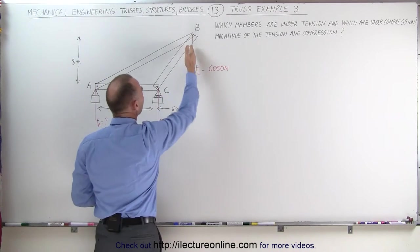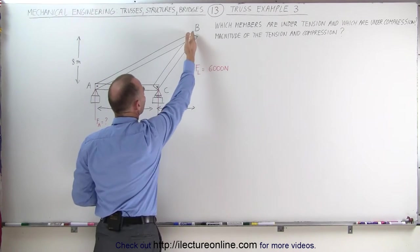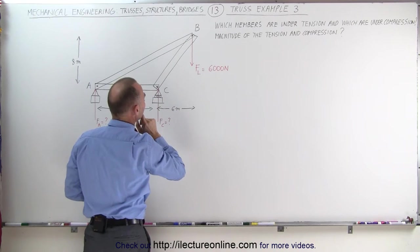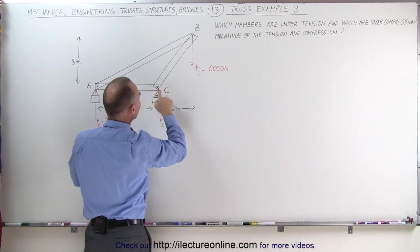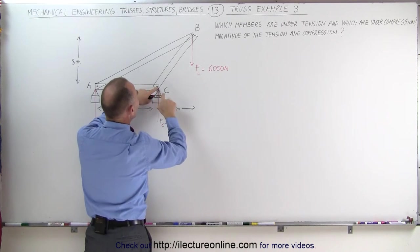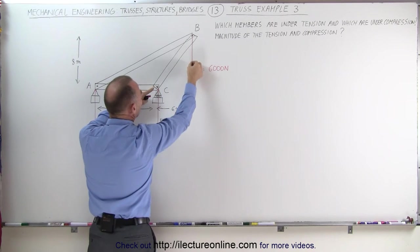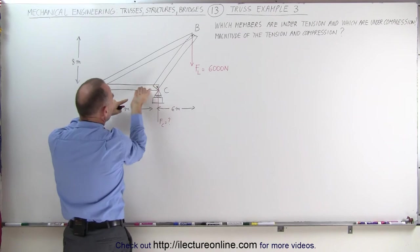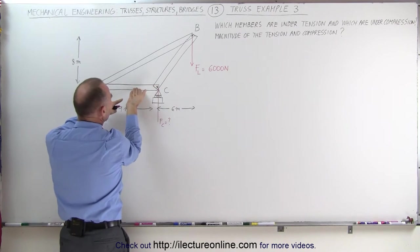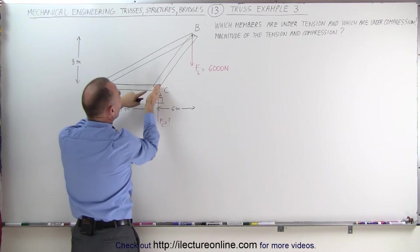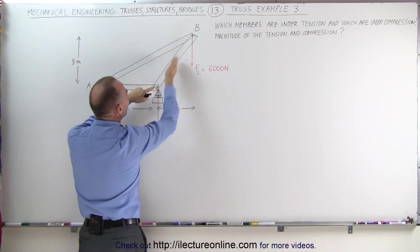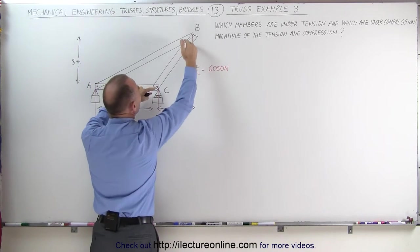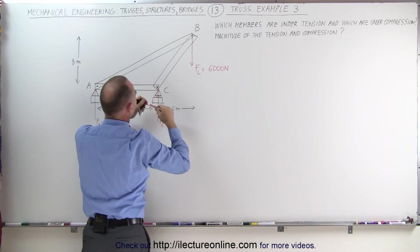Here we have a load force pulling on this joint right here. If this beam was not connected here and the force came down in this direction, this beam would simply slide this way. This pin is preventing the beam from doing that, which puts this beam under compression.